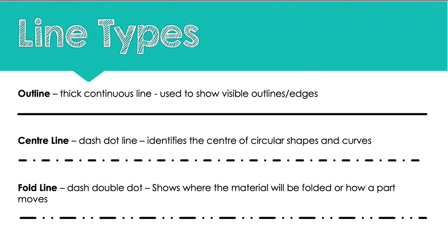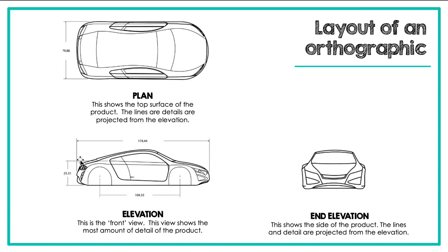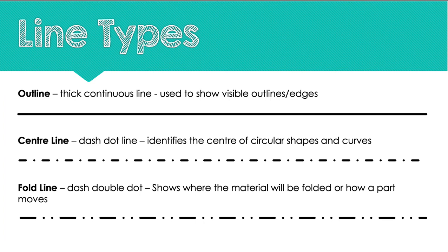Now for National 5, you need to learn five different line types. Take note of them because you will use them frequently throughout National 5. The first line type is an outline, which is a thick continuous line that shows the edges of the object. If we go back to the car, all of these lines are the outline. A centre line is a dash dot dash line, and that shows the centre of circular shapes and curves. So if you were to draw a circle or an arc or a curve, you would put a centre line in the middle of the circle to show that it is a circular shape.